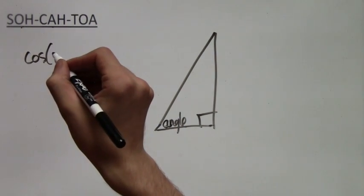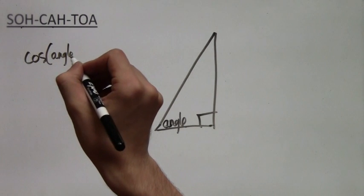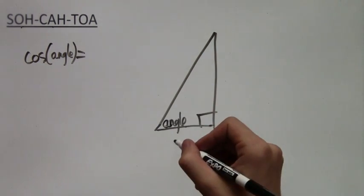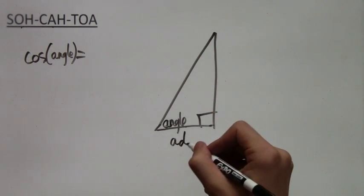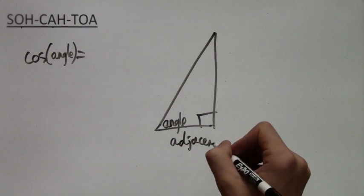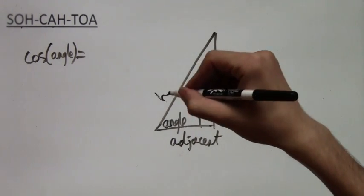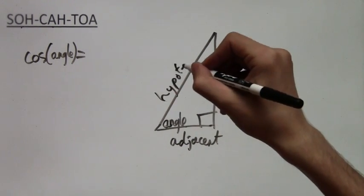So we have cosine of this given angle is equal to, and then the angle has an adjacent side. There's also the opposite side, but the opposite side does not matter for now, for the CAH.